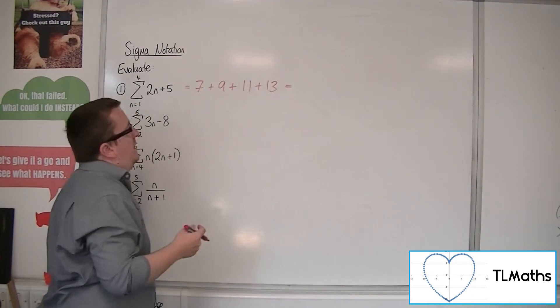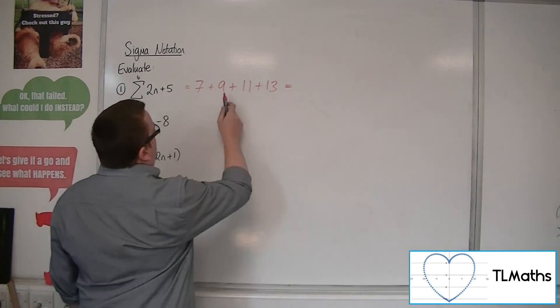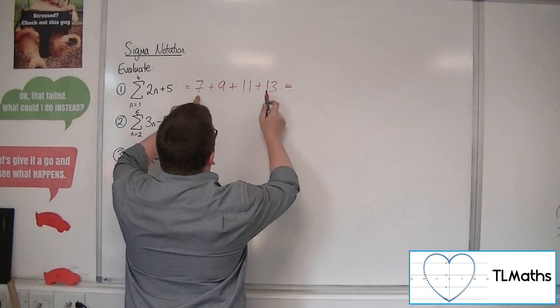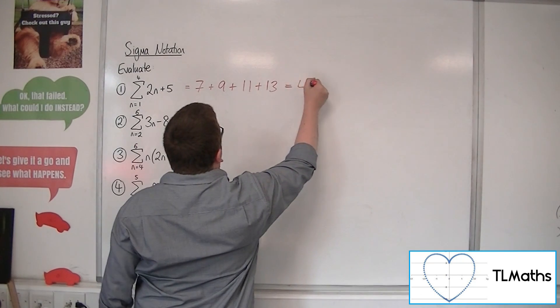OK, and then we just want to add all of these together. So 9 and 11 are 20, 7 and 13 are 20, so we've got 40.